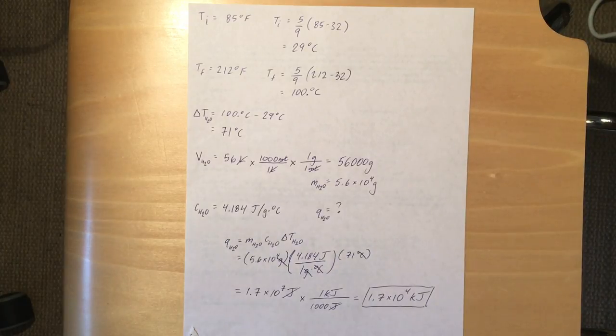Just look back up and then just plug those numbers into where they go in the formula. So the mass is 5.6 times 10 to the fourth grams, the specific heat of water, and then the change of temperature.